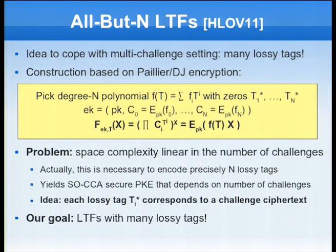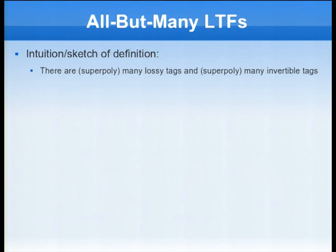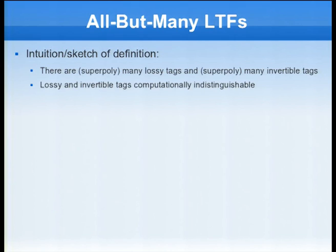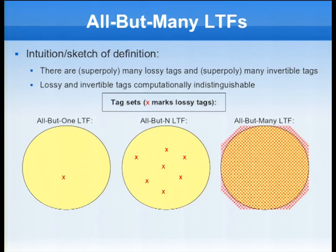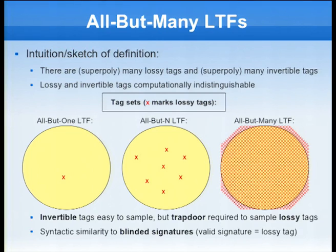Our goal is lossy trapdoor functions with many lossy tags. The intuition is that there are super-polynomially many lossy tags and also many invertible tags, and they are computationally indistinguishable. To compare: all-but-one has exactly one lossy tag; all-but-n has exactly n lossy tags; and with all-but-many lossy trapdoor functions, lossy functions are all over the place but it's hard to find them. With a special trapdoor you can sample lossy tags, but it's hard to find them without the trapdoor.